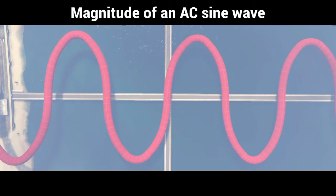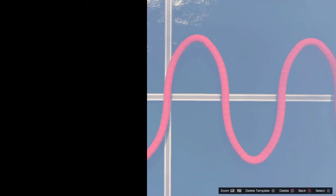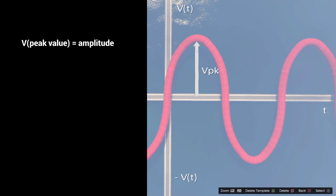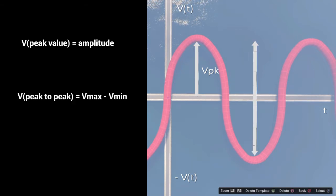There are three different ways we can express the magnitude of a sine wave. One being the peak value, which is the same as the amplitude. Another is the peak-to-peak value, which is the difference between the highest instantaneous voltage and the lowest instantaneous voltage.